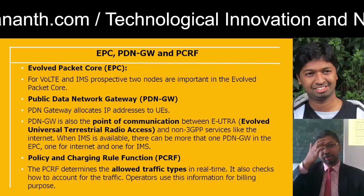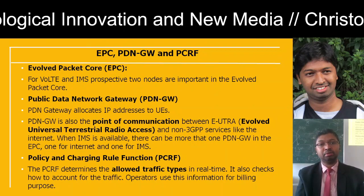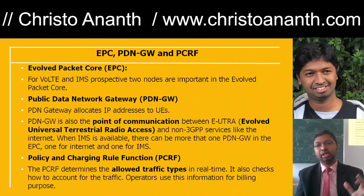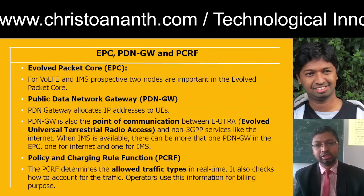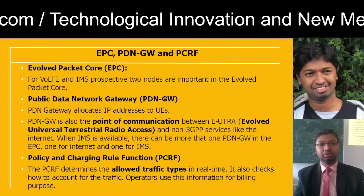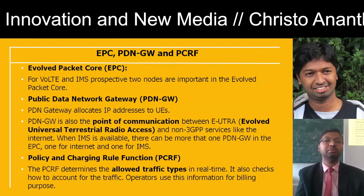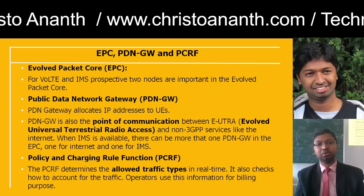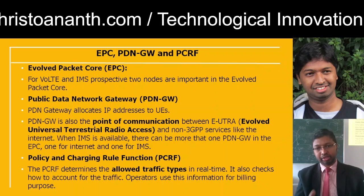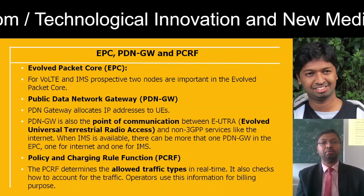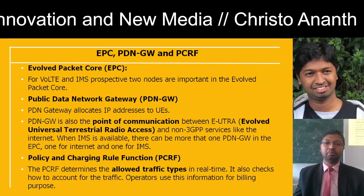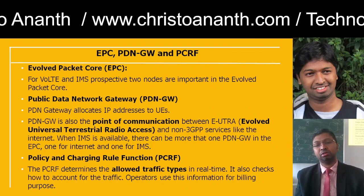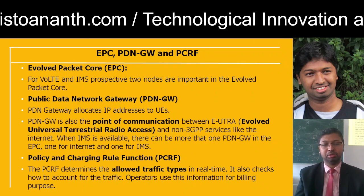For VoLTE or IMS, the Evolved Packet Core is used. The PDN Gateway allocates IP addresses to user equipment; it is the communication point between the Evolved UTRA and non-3GPP networks like the internet. When the IP Multimedia Subsystem is available, there can be more than one PDN Gateway in the EPC — one for the internet and one for IMS. The Policy and Charging Rules Function determines allowed traffic in real time, checks how to account for that traffic, and operators use this information for billing purposes.